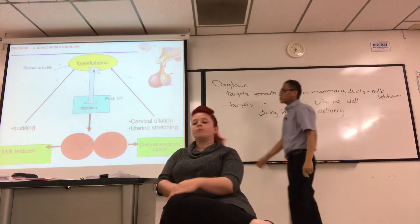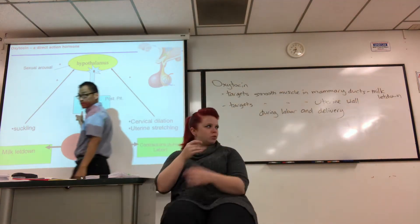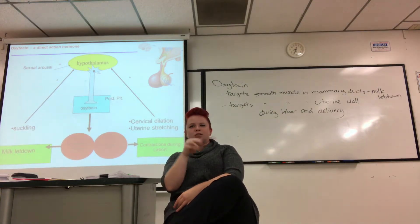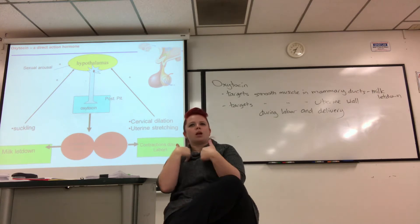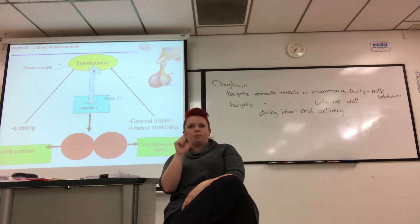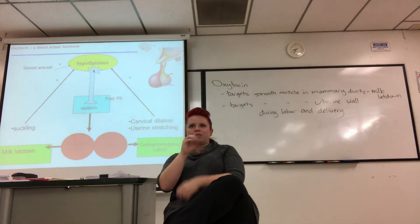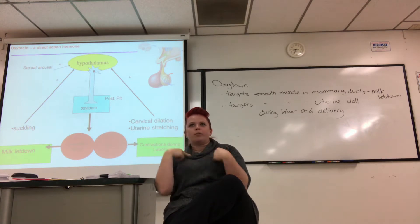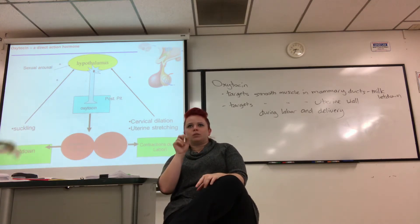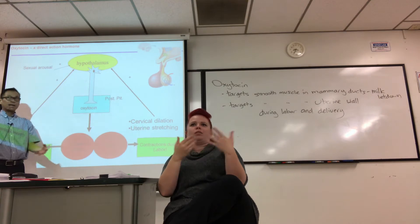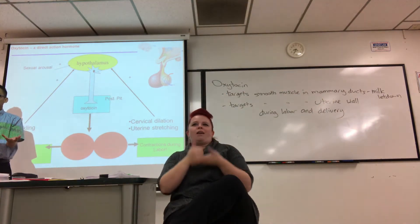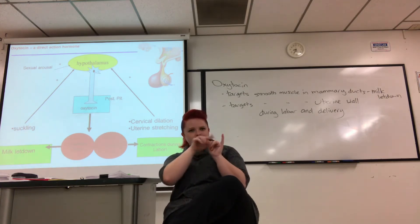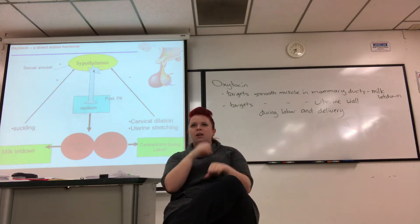Sex arousal has also been known to cause the secretion of oxytocin. In some animals, mating triggers ovulation, but that's not the case in humans. However, the sex act in humans does trigger the release of oxytocin, which can help contract the uterus, kind of washing semen up toward where the egg might be. So it does increase the chance of conception during sex, even though it doesn't trigger ovulation as it may in other mammals.